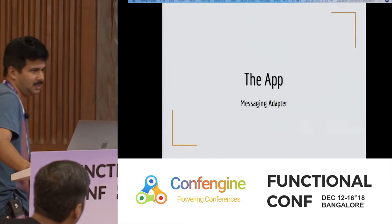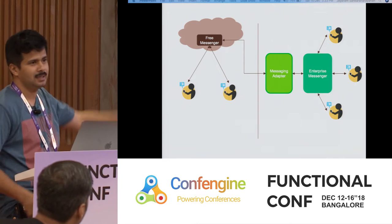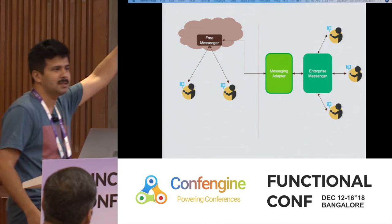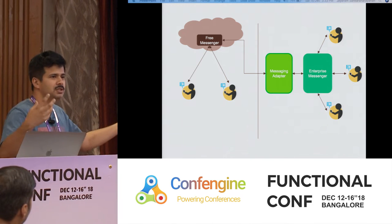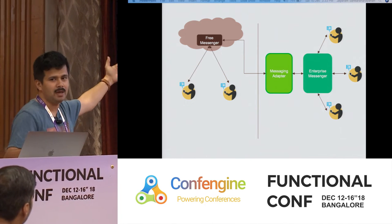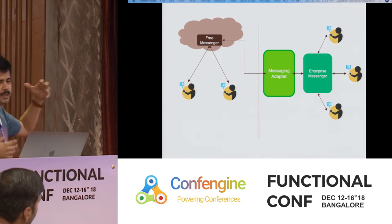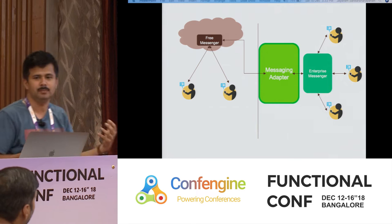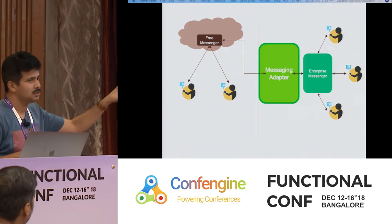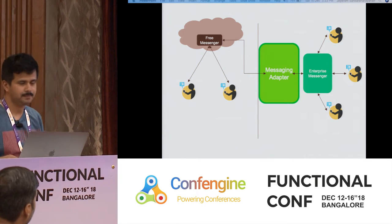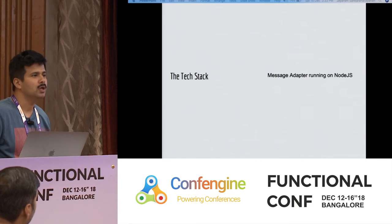So this is the app — it's a kind of messaging adapter. There's a free messenger service in the cloud and an enterprise messaging service, and you want to bridge these two. Users from outside need to be able to reach enterprise users. The adapter is the component we built to bridge these two messaging and signaling systems. And this adapter is running on Node.